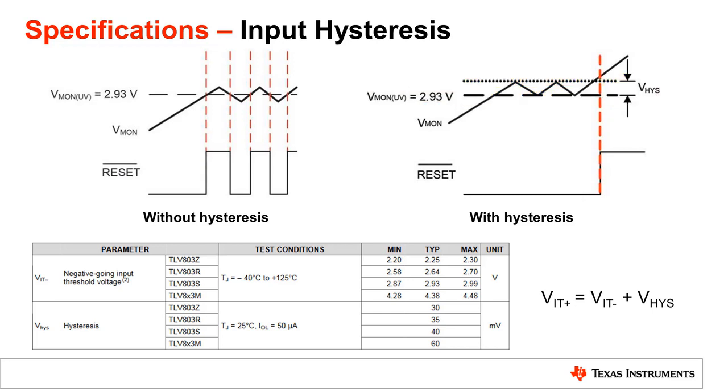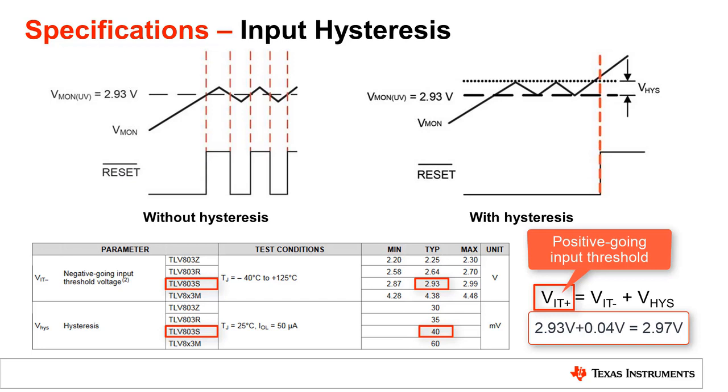In this example, looking at the TLV803S, the negative going threshold voltage is 2.93 volts nominal. To get the supervisor to deassert the reset, the voltage rail will have to go past 2.93 volts, plus a hysteresis voltage of 40 millivolts as specified in the parametric table. This total voltage to deassert the reset will be 2.97 volts, and is also called the positive going threshold voltage.